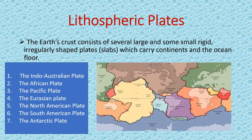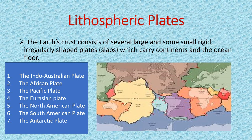The reason behind the movement of lithospheric plates is molten magma. The earth is made up of three layers: the crust (also known as lithosphere), the mantle, and the core. In the core, rocks and minerals are found in molten form, which is known as magma. This molten magma moves in a circular manner, and due to this movement, the lithospheric plates also move.